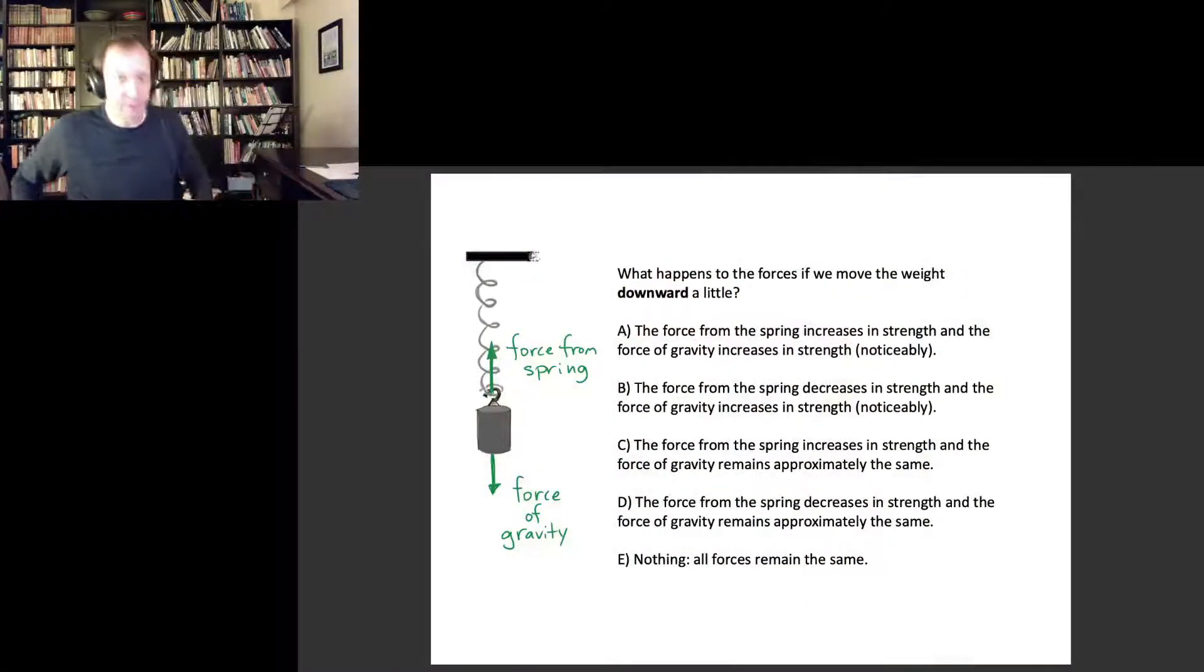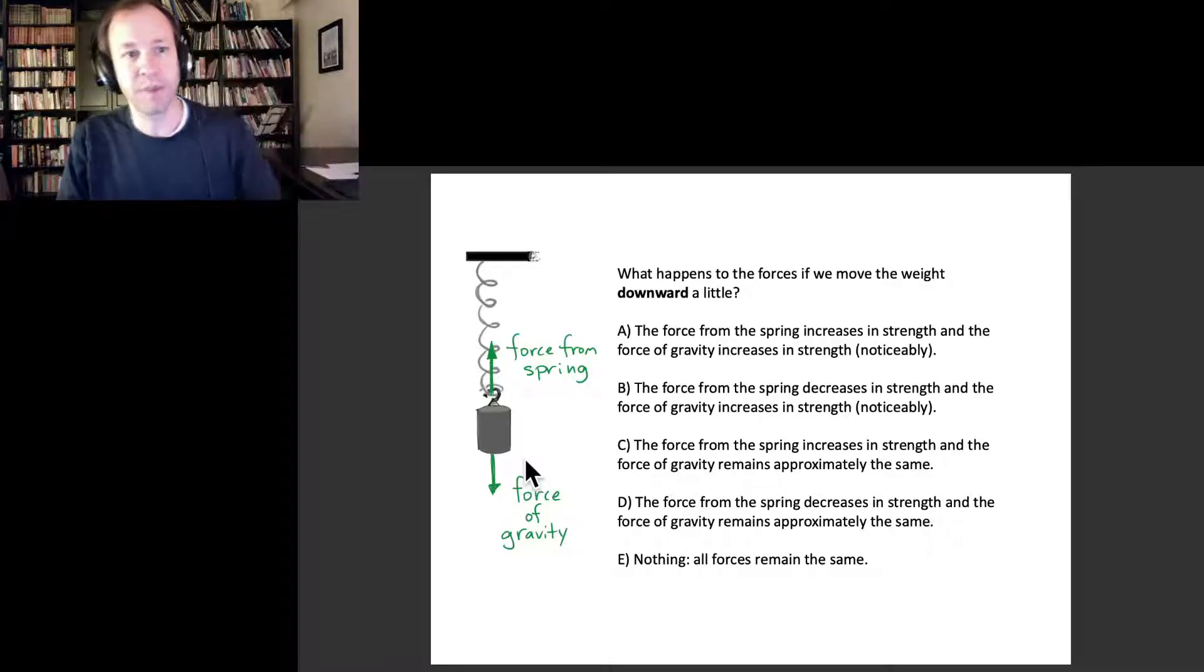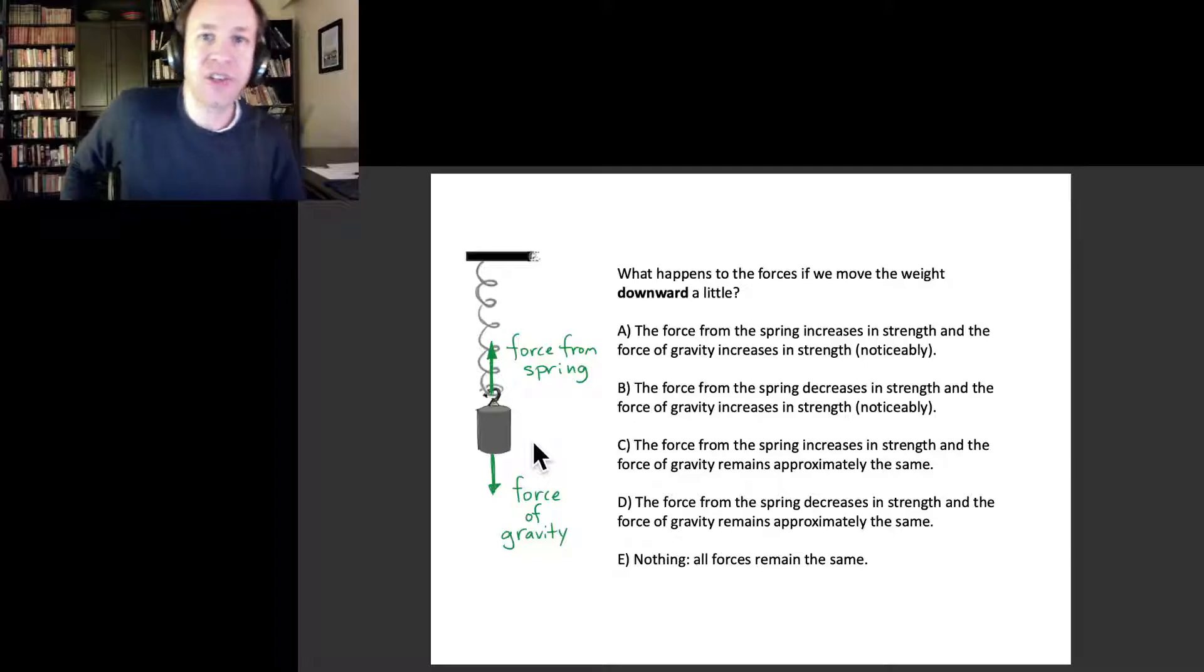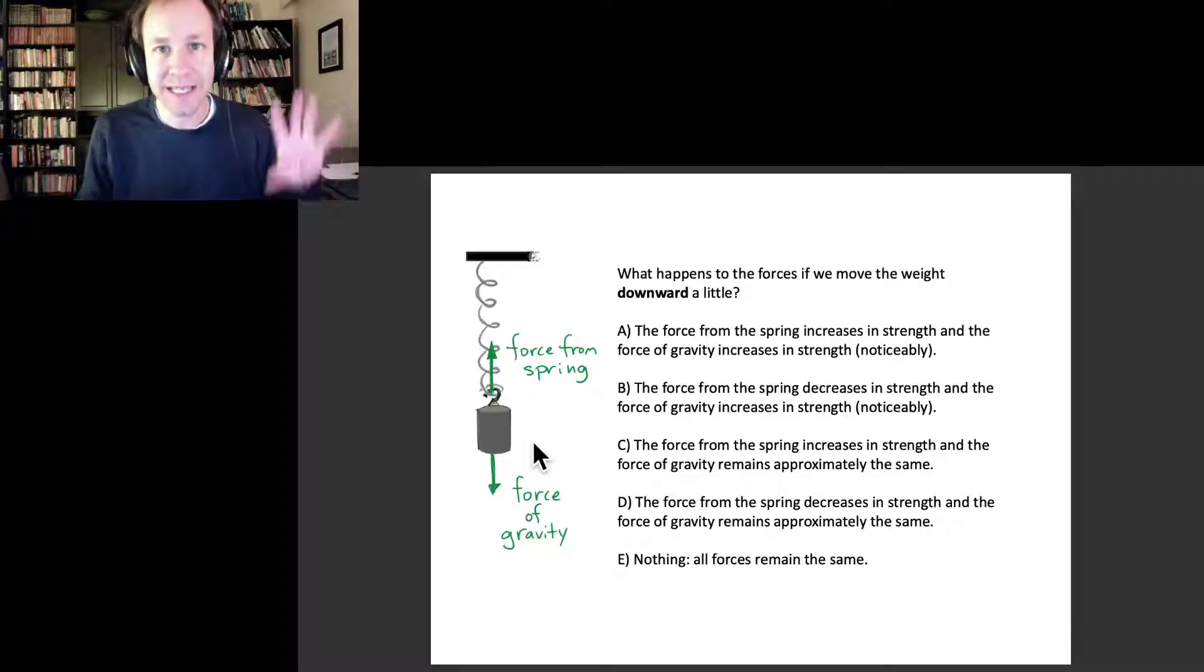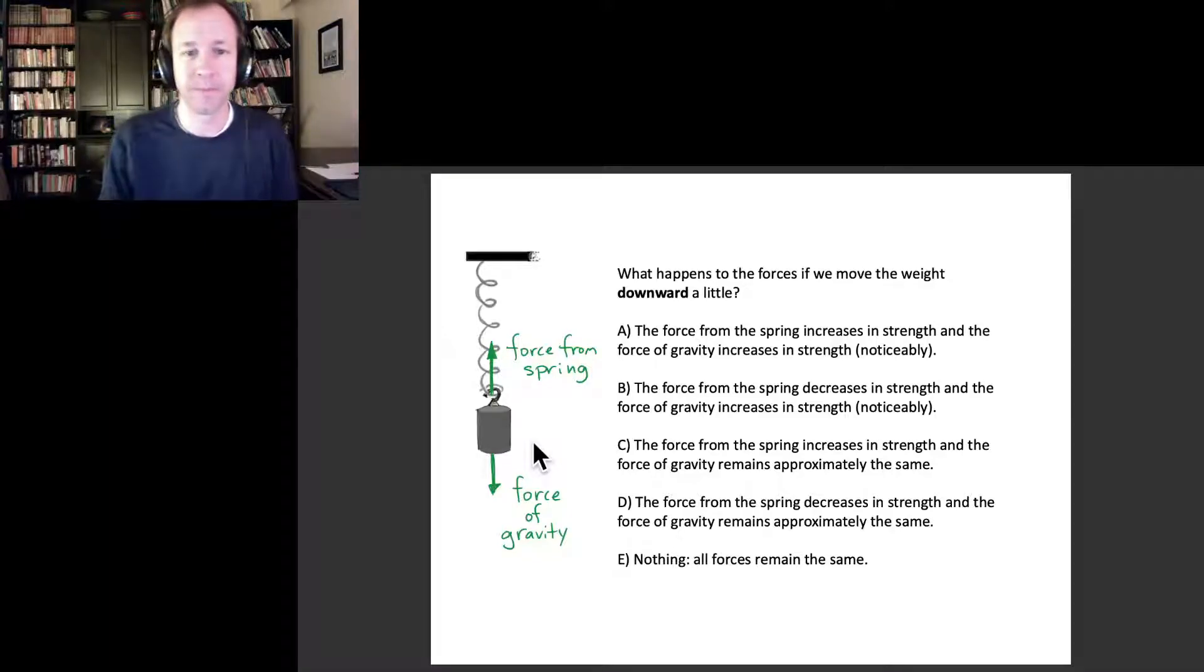I want you to think about the situation you just looked at, drawn in the picture here. To start understanding the physics of oscillations, I want to understand what happens when we take a system in mechanical equilibrium and displace it a little bit away from that position. What happens to the various forces if we pull the object down just a little bit? Take a minute to answer that.